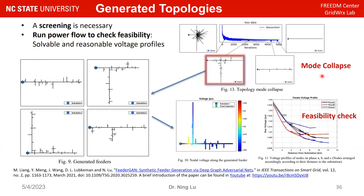Borrowing directly from image processing does have issues, though. Unlike a fake tree picture that's harmless, a power system model that doesn't meet physical requirements cannot be used. You need post-processing: run power flow to check voltages are within limits and line parameters are correctly set. You also need to monitor mode collapse — if the model is over-trained it will collapse. In power systems, we must use domain expertise to fine-tune and validate that generated models actually work in the physical system.